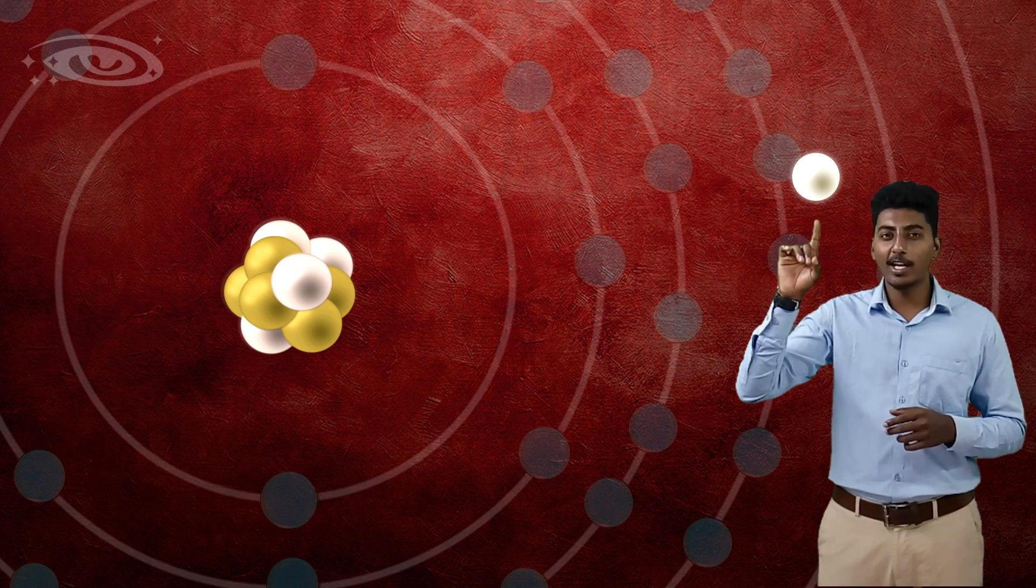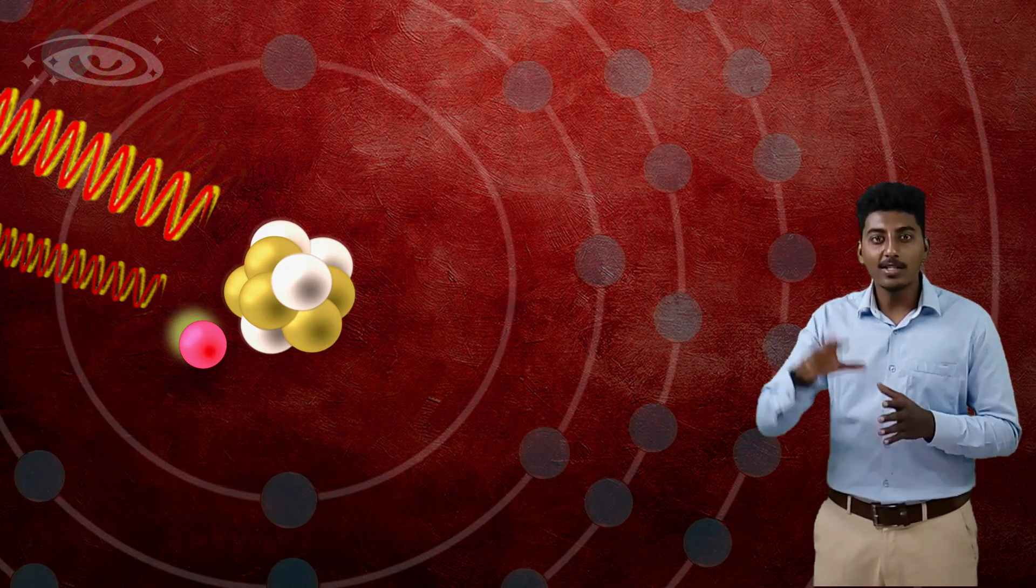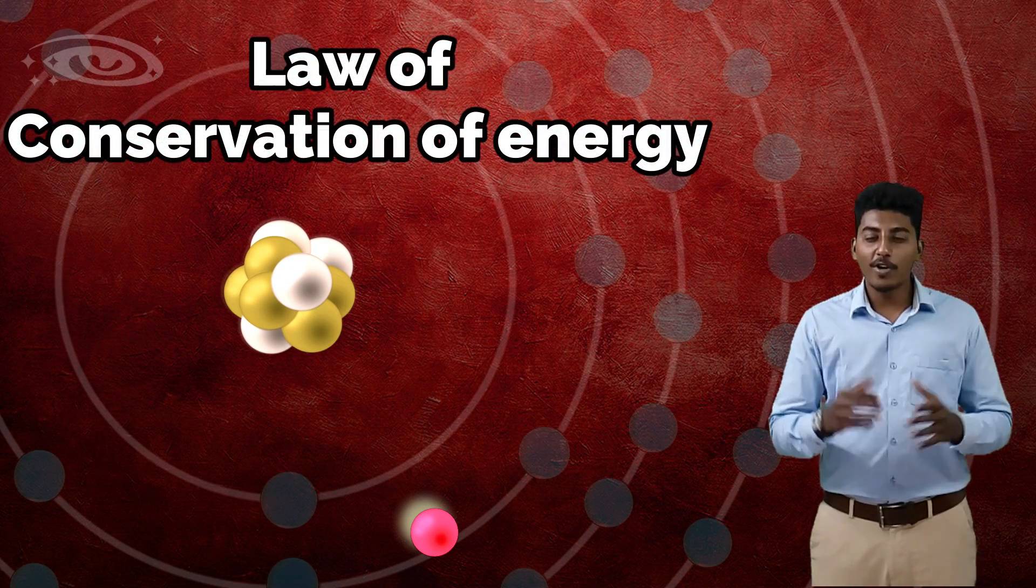Here, when this high velocity electron passes near the nucleus, due to the Coulomb force of attraction, the electron deflects and loses its kinetic energy into bremsstrahlung. This transformation of energy satisfies the law of conservation of energy.